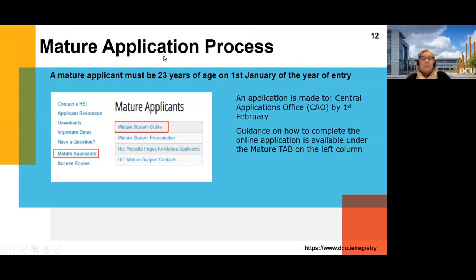For mature applicants — anyone who is 23 years of age on the 1st of January — this is a really good option. You don't need points for your programme; it's literally based on your previous experience and your motivation for a particular course. The application is through the CAO, and under question eight, it'll ask for your previous programmes or courses completed. There's also a box for mature, and when you click that it will ask for a personal statement — your motivation and why you've picked that programme. The programme chair assesses your personal statement.